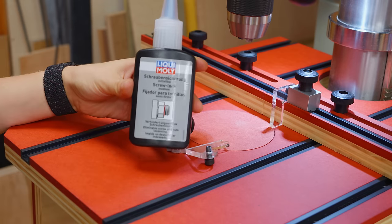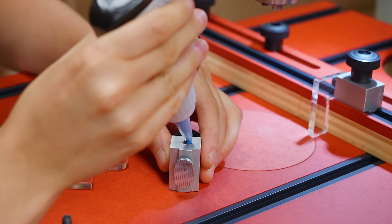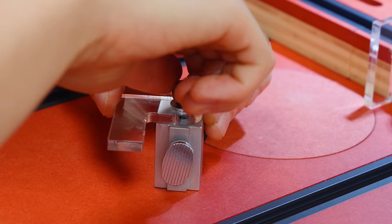To prevent the bolt from turning and unscrewing when flipping the acrylic, I put a few drops of thread lock.